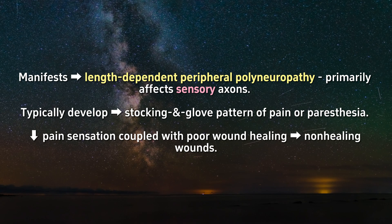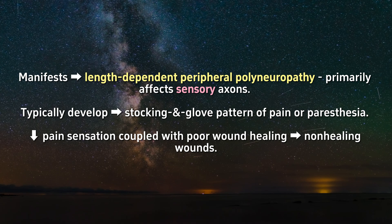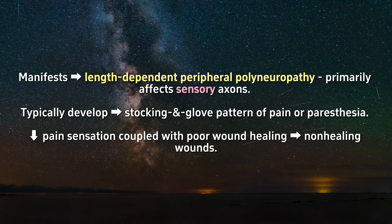Diabetic neuropathy often manifests as a length-dependent peripheral polyneuropathy that primarily affects sensory axons. Patients typically develop a stocking and glove pattern of pain or paresthesia. Diminished pain sensation coupled with poor wound healing predisposes diabetic patients to develop non-healing wounds.